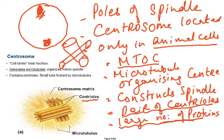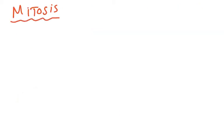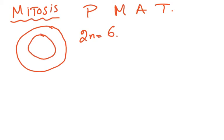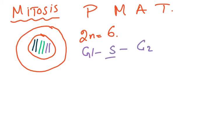Now let's look at the details of mitosis — four stages: PMAT. I'm going to take a cell in which the diploid number is 6, so the nucleus has six chromosomes drawn in three pairs in three colours. Remember, before mitosis begins, the cell must have passed through G1, S phase, and G2 of interphase.